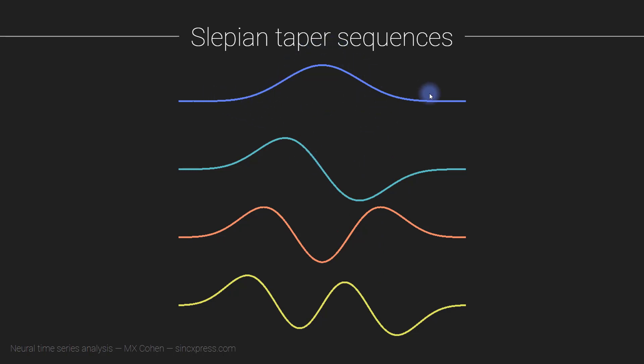You can see the first sequence looks a bit like a Gaussian. And then the next sequence looks a bit like the derivative of the Gaussian. And each one looks a little bit like the derivative of the previous one. But what's interesting about these tapers is that they're all orthogonal to each other. So they are all mutually uncorrelated.